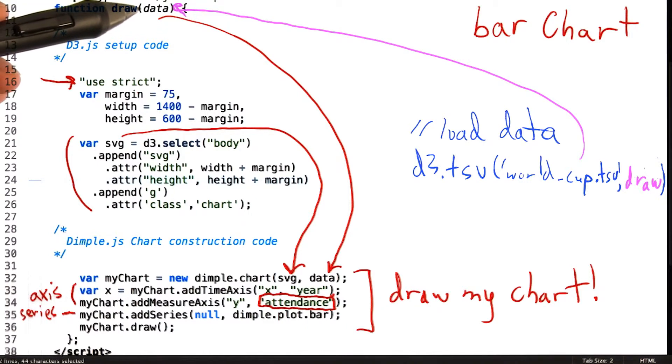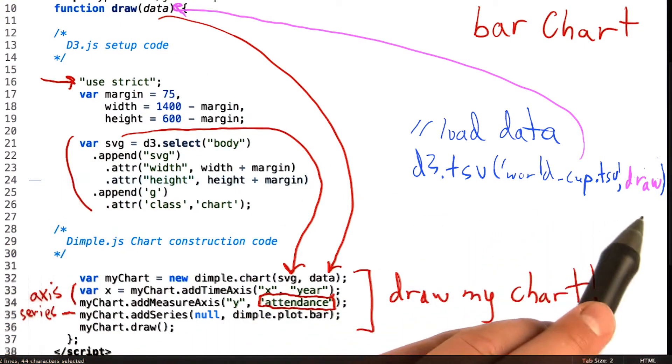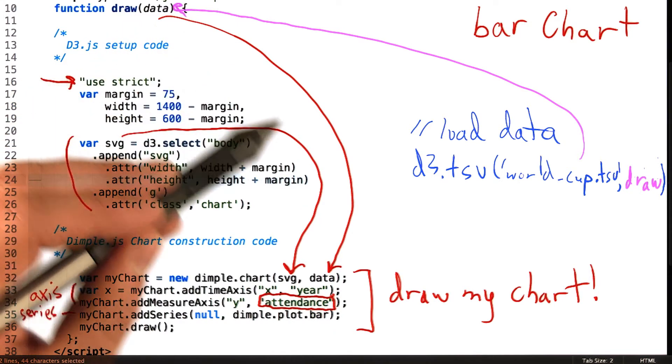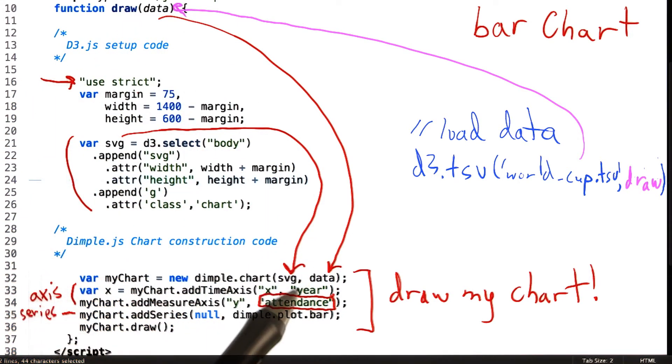This data object is the same as the contents of our World Cup file, which gets passed to the Dimple chart constructor. There are other ways to manipulate the chart object if you're interested. I definitely recommend always reading the documentation of any function you use.